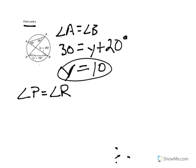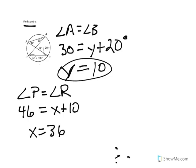So we know angle P is 46, and angle R is X plus 10. Subtract 10 from both sides, so then we have X is equal to 36. And that's how we solved that one.